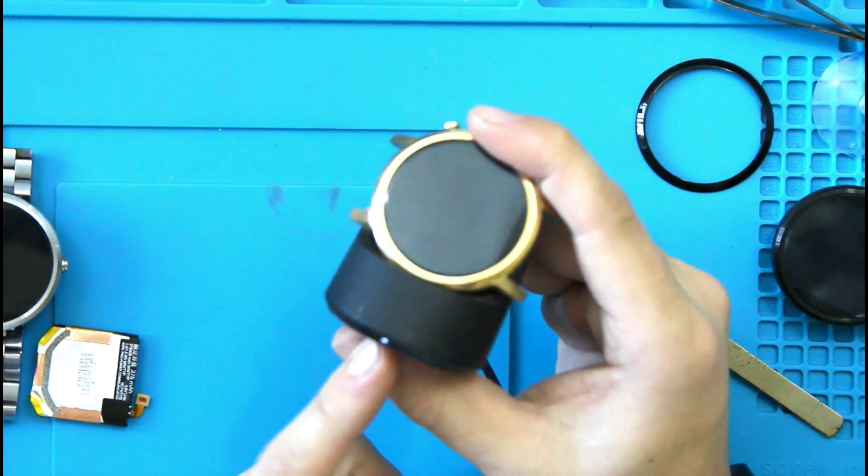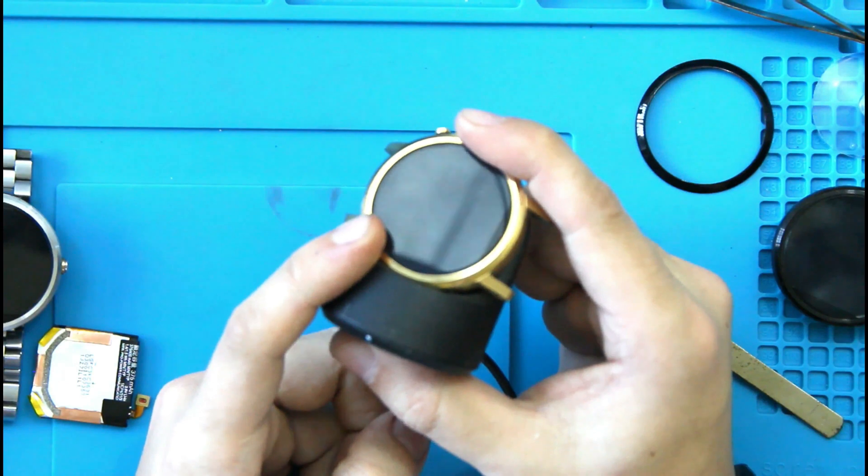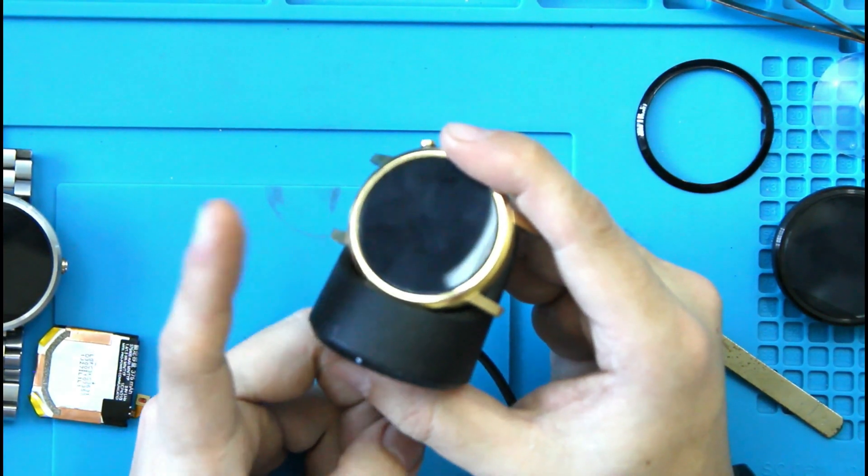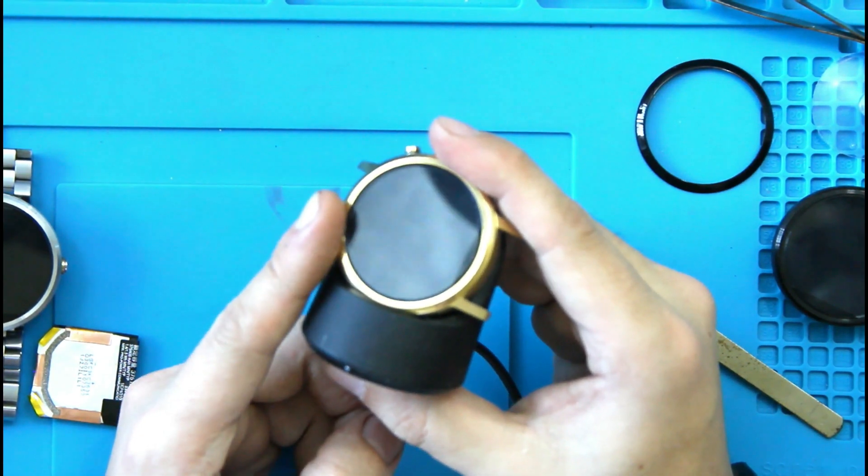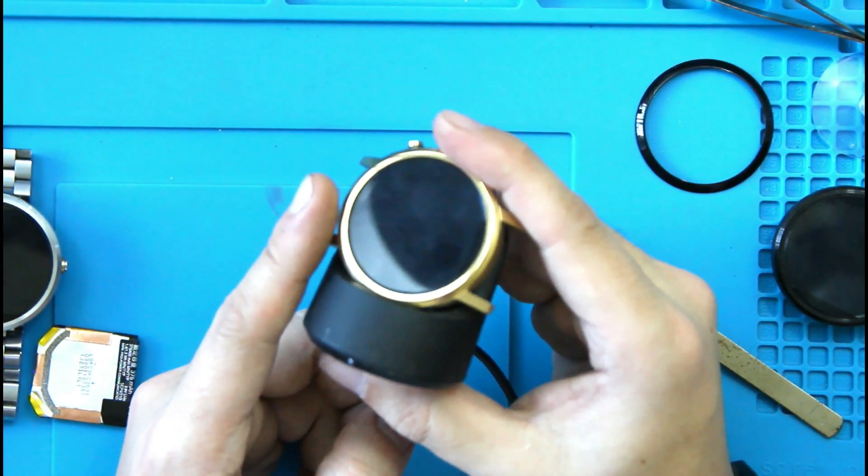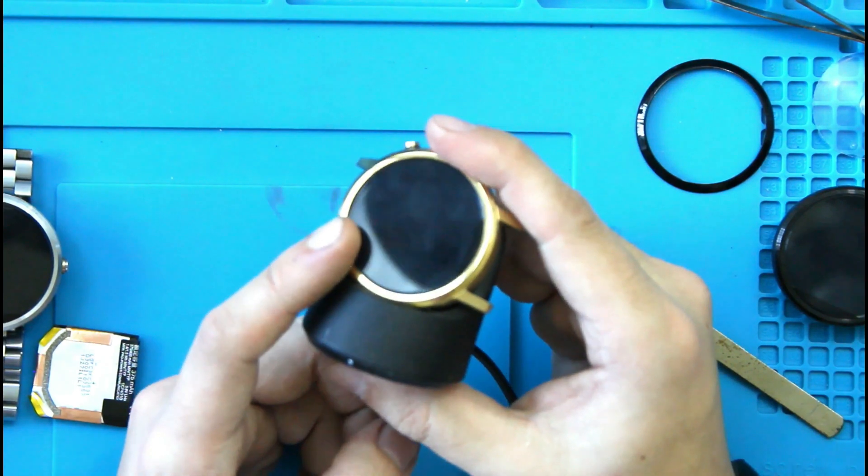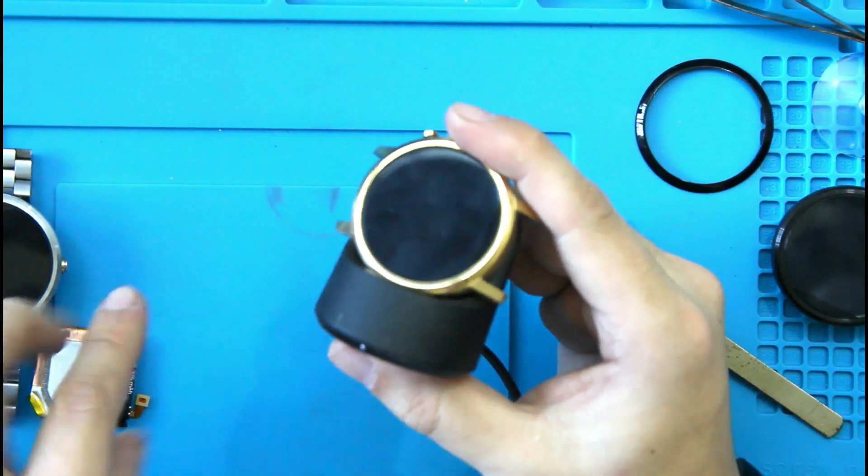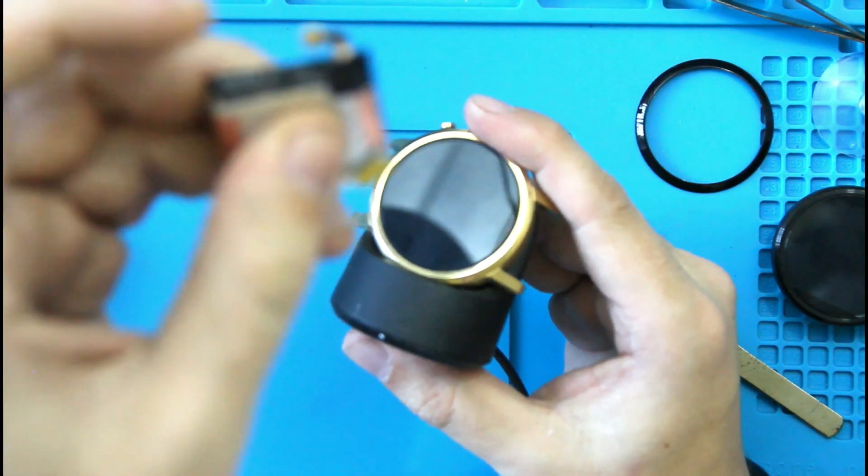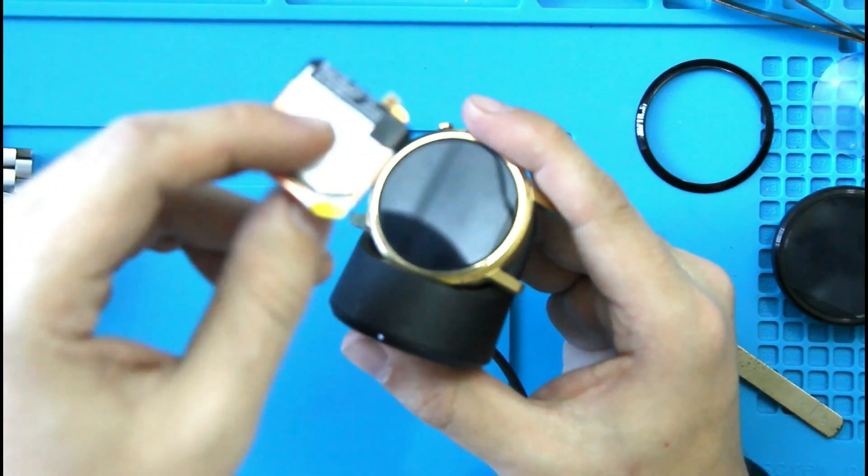So theoretically, the watch is being charged, but nothing shows up on the screen. So probably I have a bad screen on a brand new watch. So this lasted about three months, I would say, and stopped working. So I just spent some money on a battery that's going to be useless. So here was my old battery. I noticed it wasn't puffy or anything.